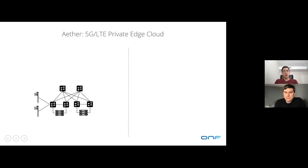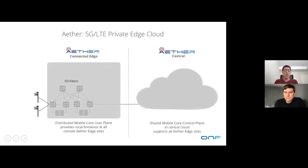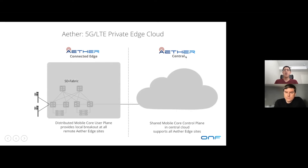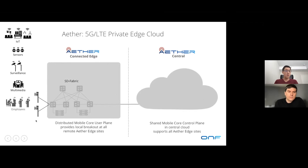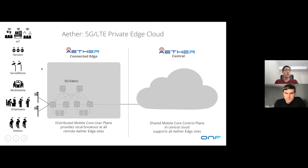Ether can be viewed as two separate parts. The first is Ether Connected Edge, sitting in the edge cloud close to customers, with a distributed mobile core user plane providing local breakout at all remote Ether edges. On the right is Ether Central, sitting in a public cloud, with a shared mobile core control plane for all Ether edges. On the left are access devices like base stations. Ether initially focuses on use cases like IoT, various sensors, surveillance, multimedia, employee network, and visitor network — all typical enterprise edge use cases.